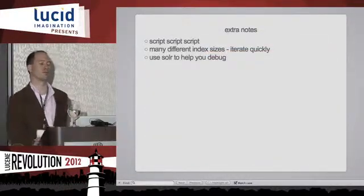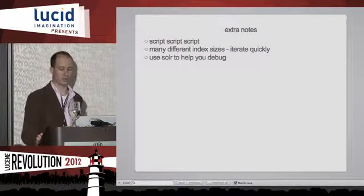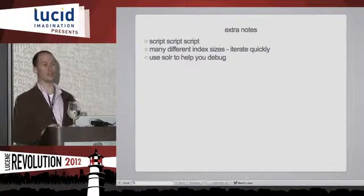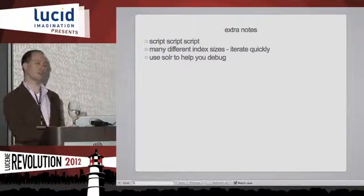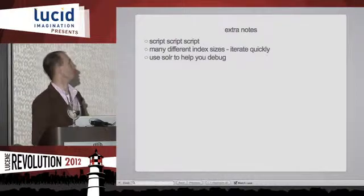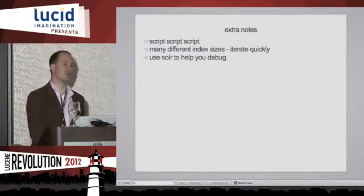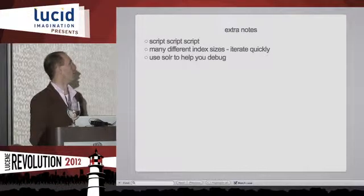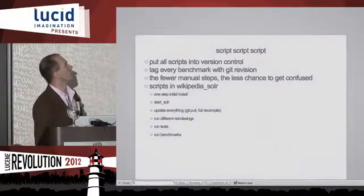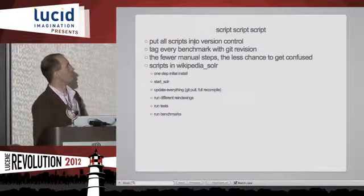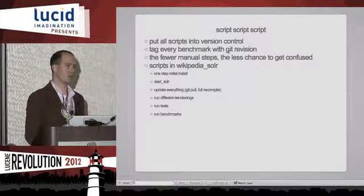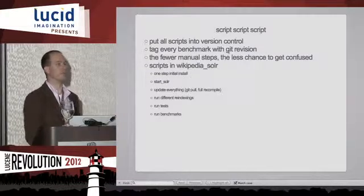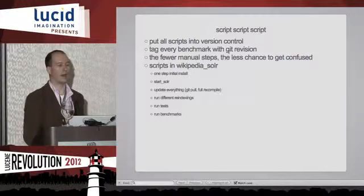As you work through a Solr project, script stuff. It makes a difference, especially when you have longer run times. I was dealing with three machines, trying this on this machine, that on that machine — the better scripted it is, your life will be easier. Use different index sizes to iterate through stuff quickly as you try different ideas. Put all scripts in version control and tag every benchmark with a git revision. Even having in your indexes the git revision that was used to index them is going to be helpful.